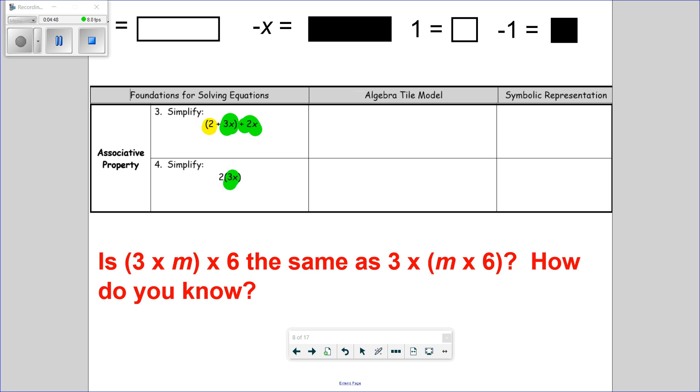So, associative property. 2 plus 3x plus 2x. I see 2 plus 5x. Or I say 5x plus 2. And what's 2 groups of 3x's? Here's 3x's. I need 2 groups of it. So, it's 6x. Could I say it as 2 times 3? 6? 6x? Yes, I can.